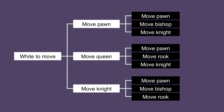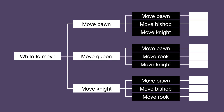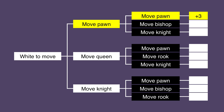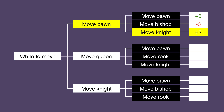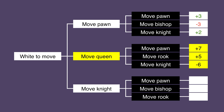Each of these combinations has a specific payoff for White, relating to the strength of White's position against Black. If White moves a Pawn and Black counters by moving a Pawn, White will be ahead by 3 points. If instead Black responds by moving a Bishop, White will be down by 3 points. If Black moves a Knight, White's payoff will be plus 2. And so on down the list of combinations.